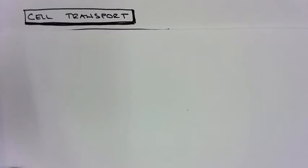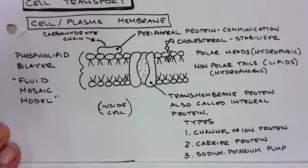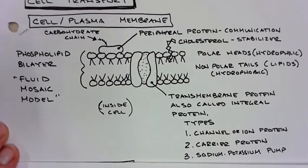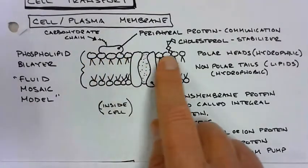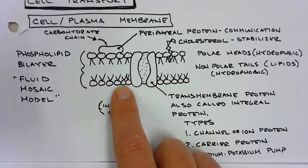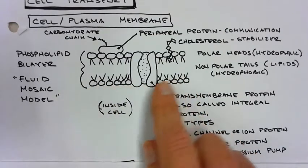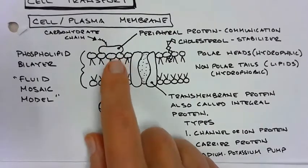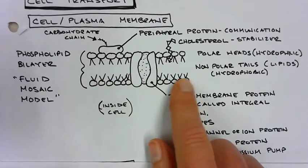But first let's look at the membrane of a cell. There are lots of pieces to the cell. You'll notice that it is a phospholipid bilayer. Phospholipids are these little fat balls with tails. Bilayer, bi means two, so there's two layers on the inside.